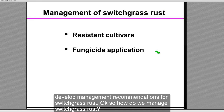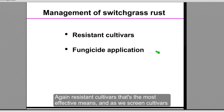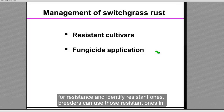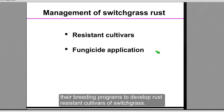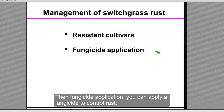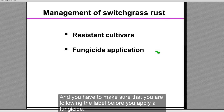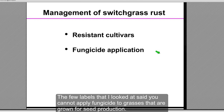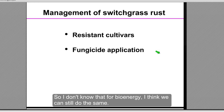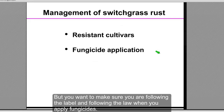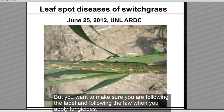How do we manage switchgrass rust? Again, resistant cultivars are the most effective means. As we screen cultivars for resistance, breeders can use those in their breeding programs to develop rust-resistant switchgrass cultivars. Fungicide application can also control rust — some fungicide labels for cereals include grasses. You have to make sure you are following the label before applying; some labels specify application to grasses grown for seed production, so follow the label and the law.